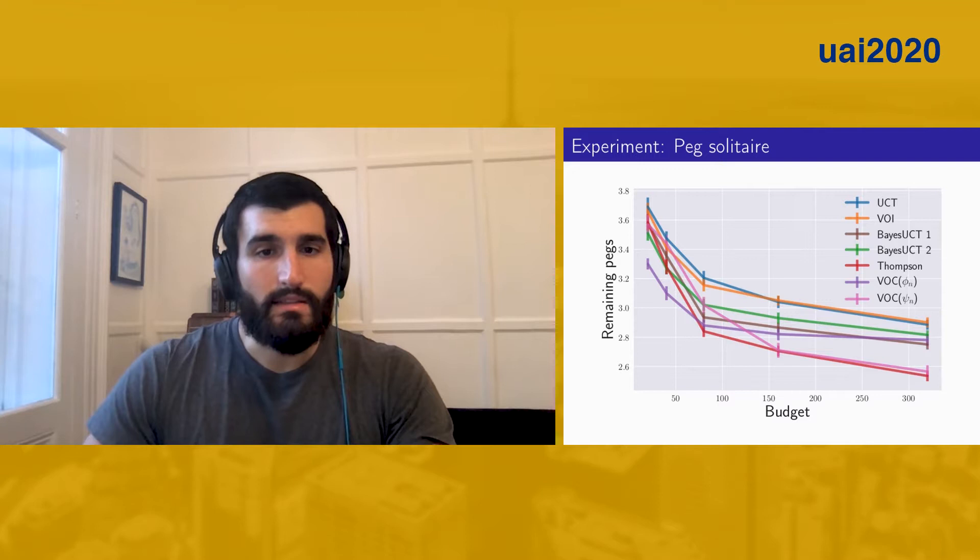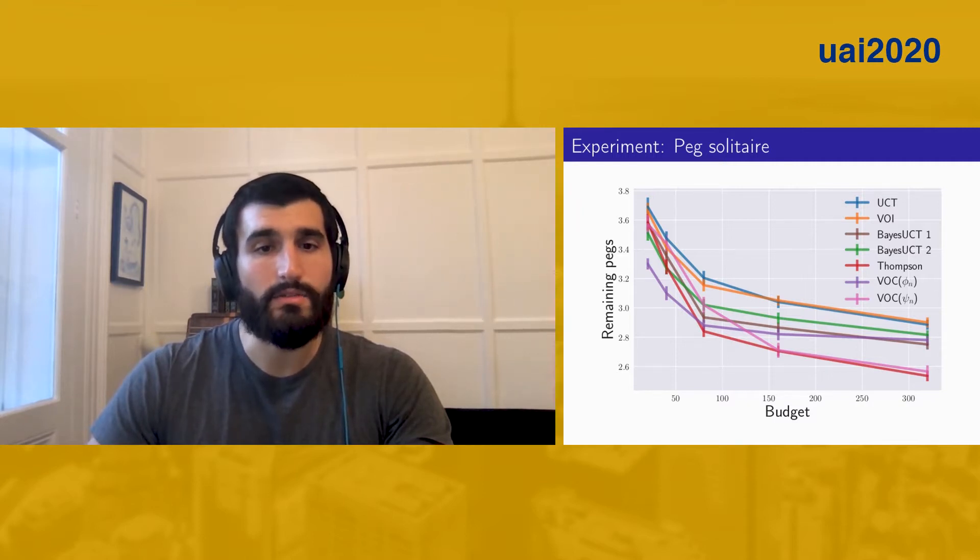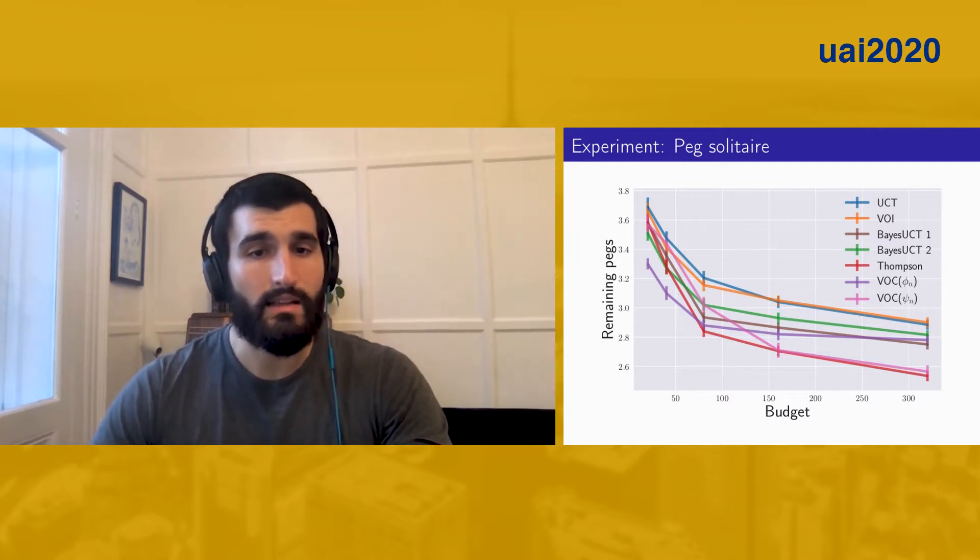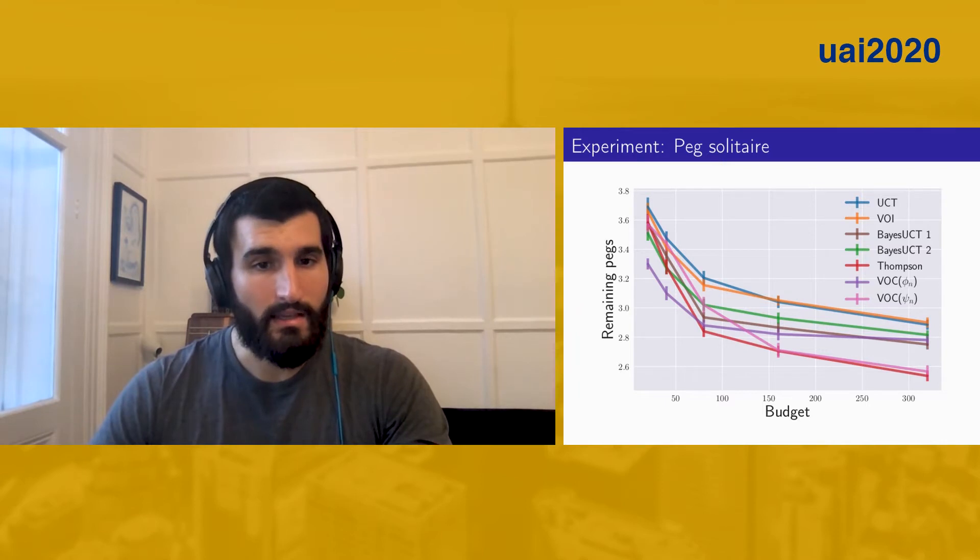Here, we display the remaining number of pegs as a function of the rollout budget. We see that in the small budget regime, the policy utilizing static values performs the best, whereas in the large budget regime, dynamic valued VOC policy does very well, along with Thompson sampling. This makes intuitive sense, as static and dynamic values are more accurate by design for small and large budgets, respectively.